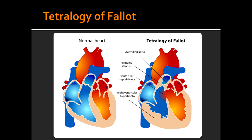The second is right ventricular hypertrophy. There is also an overriding aorta and a ventricular septal defect. These are the four things that occur in Tetralogy of Fallot.